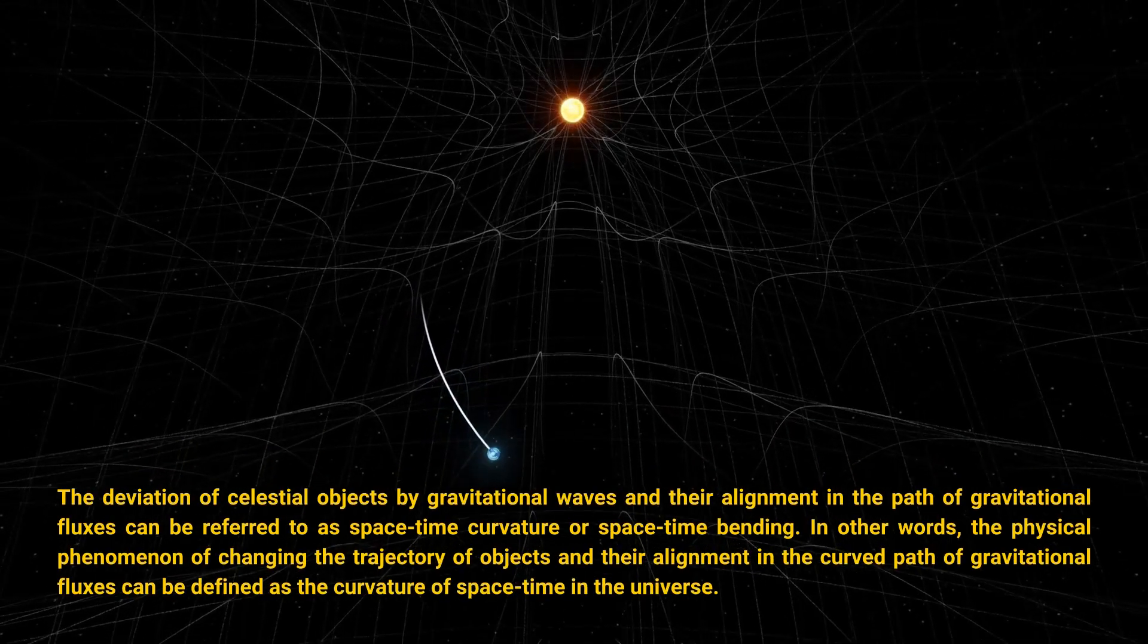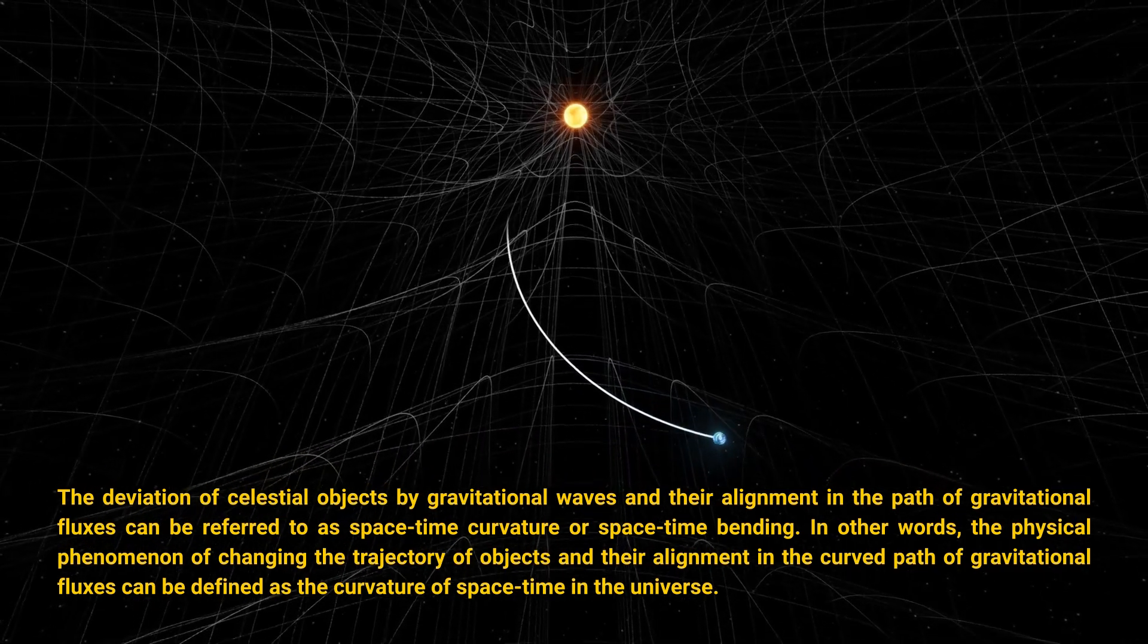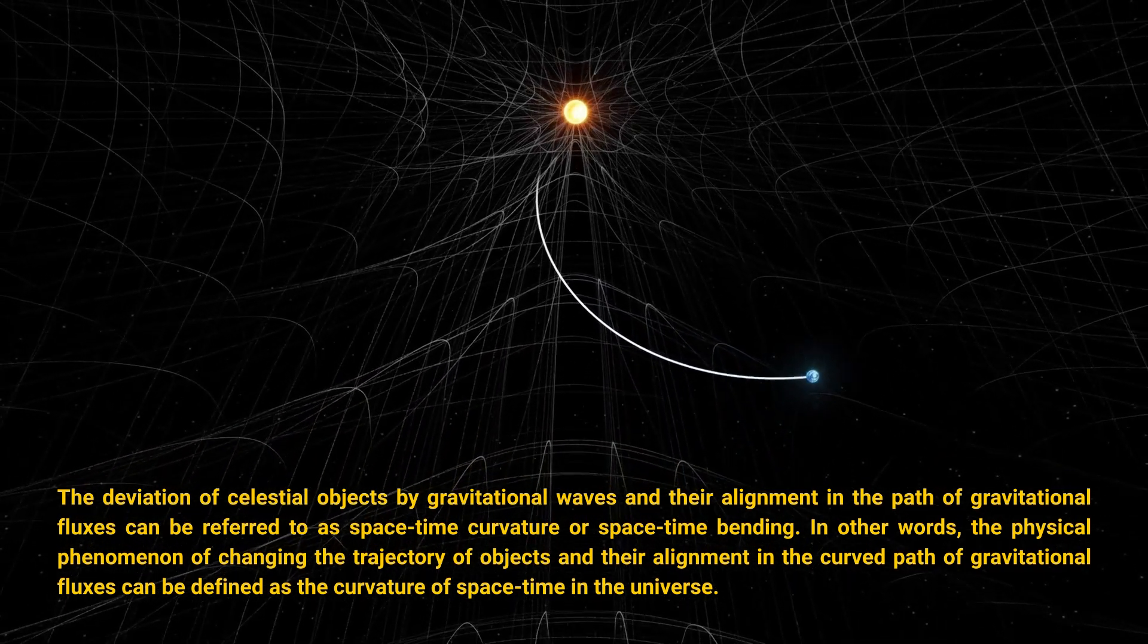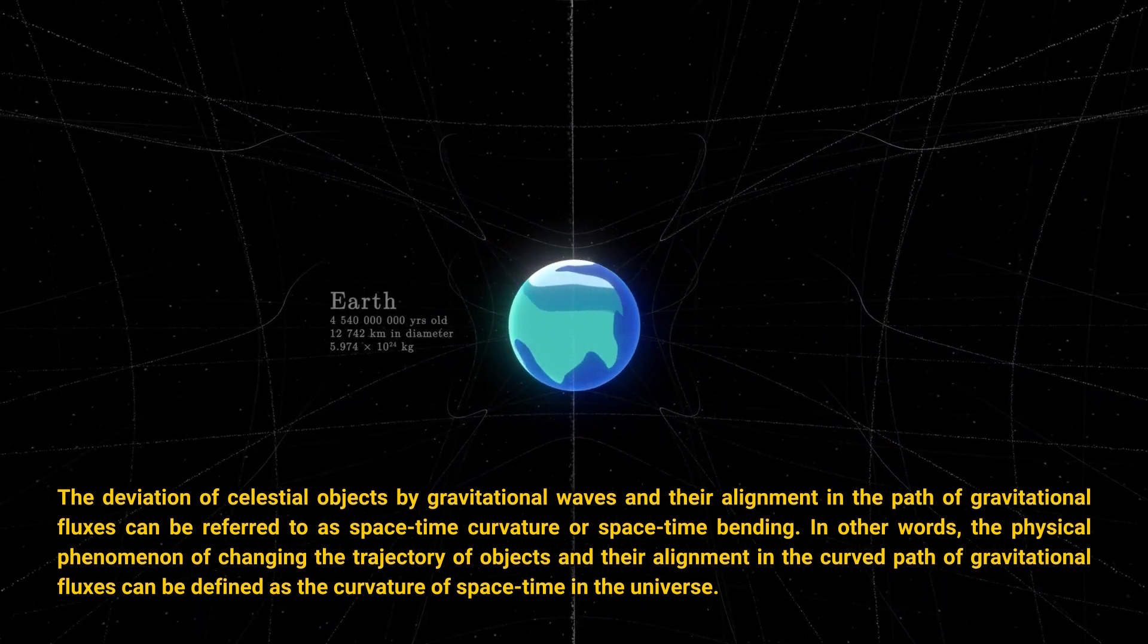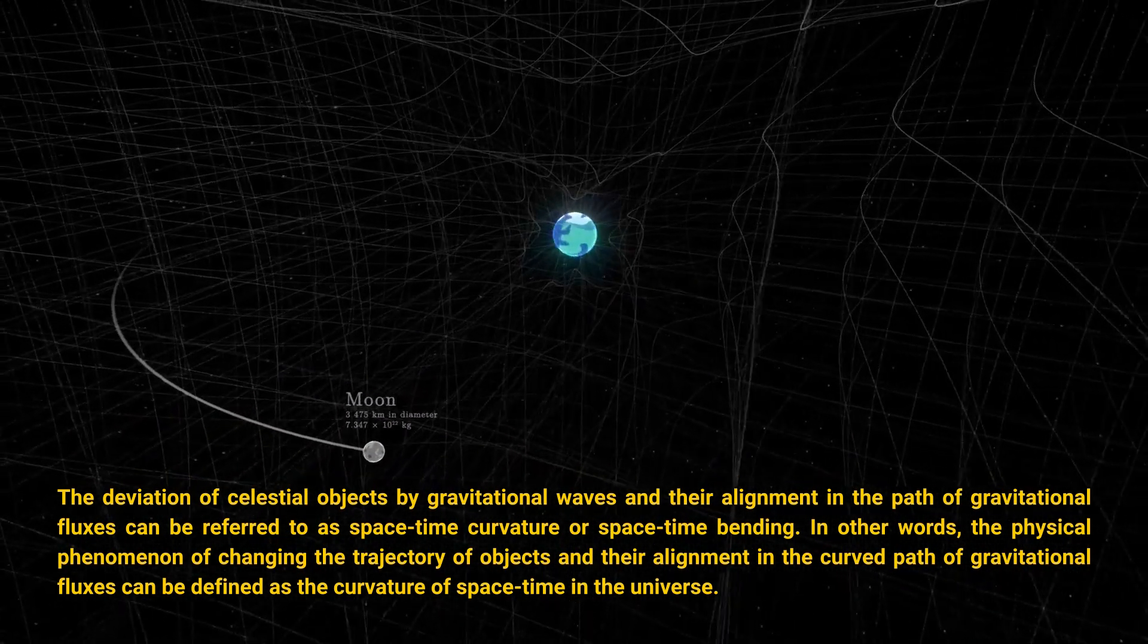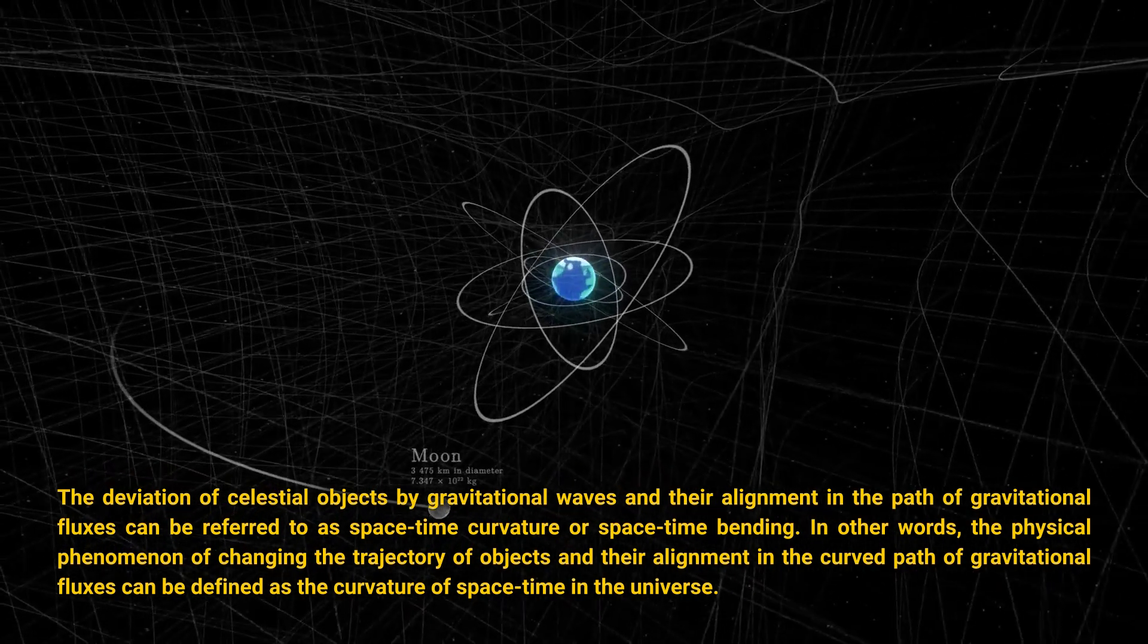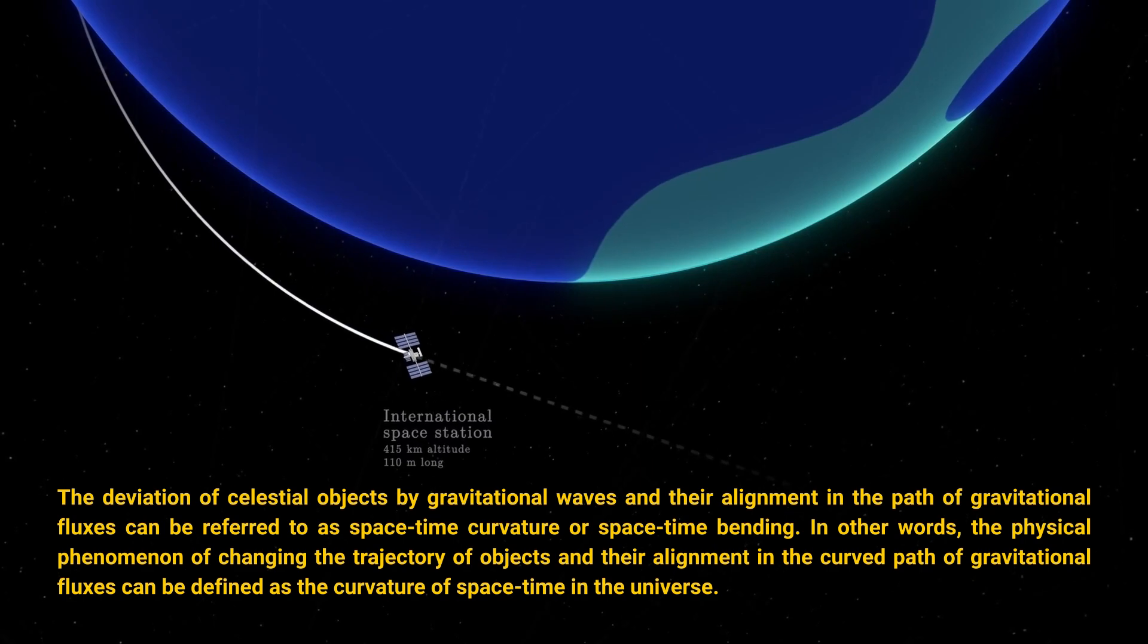The deviation of celestial objects by gravitational waves and their alignment in the paths of gravitational fluxes can be referred to as space-time curvature or space-time bending. In other words, the physical phenomenon of changing the trajectory of objects and their alignment in the curved paths of gravitational fluxes can be defined as the curvature of space-time in the universe.